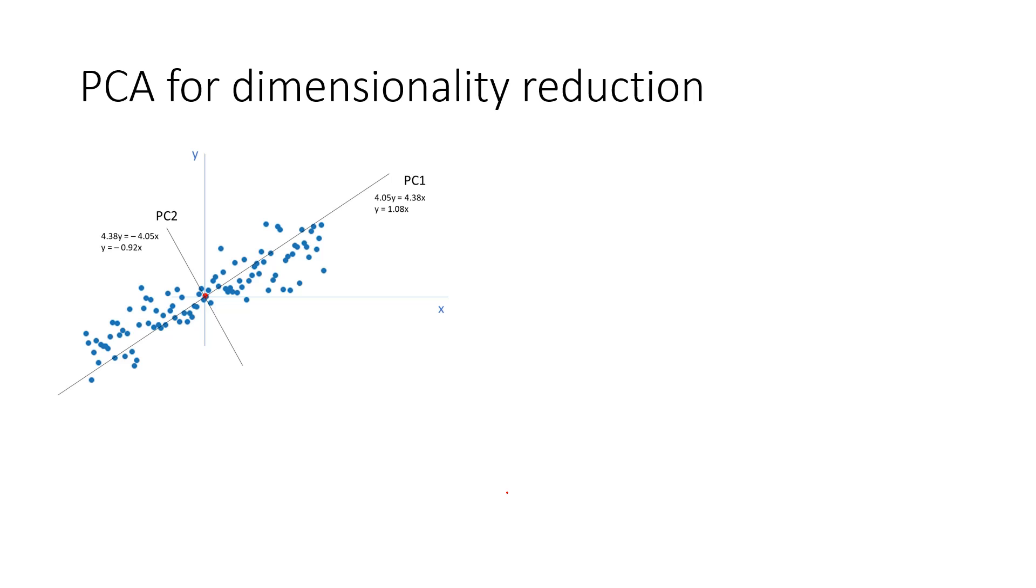Now, how to use PCA for dimensionality reduction? Well, for this particular example, if we find the eigenvalues in both the directions, we find that the principal component 1 has an eigenvalue of 8.59, and the principal component 2 has an eigenvalue of 0.46.